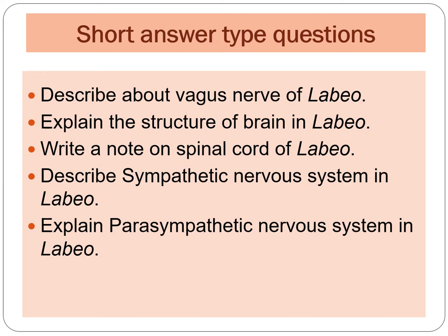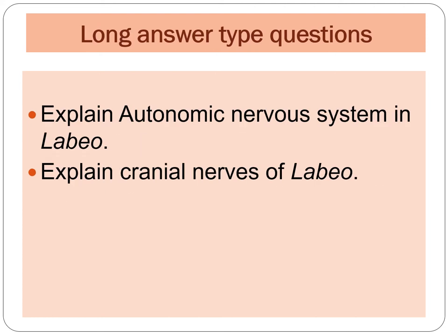The first question of this category is: describe the vagus nerve of Labeo. Second question: explain the structure of the brain in Labeo. Third question: write a note on the spinal cord of Labeo. Next: describe the sympathetic nervous system in Labeo. Next: explain the parasympathetic nervous system in Labeo.